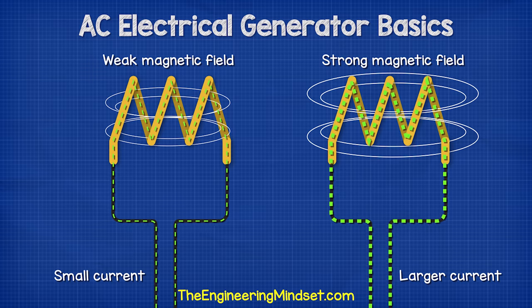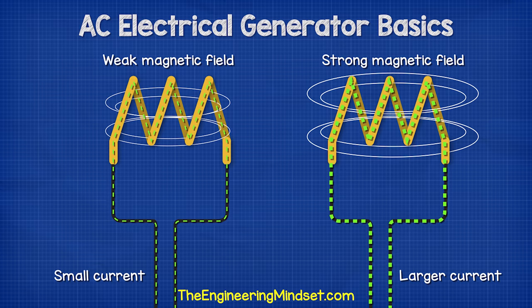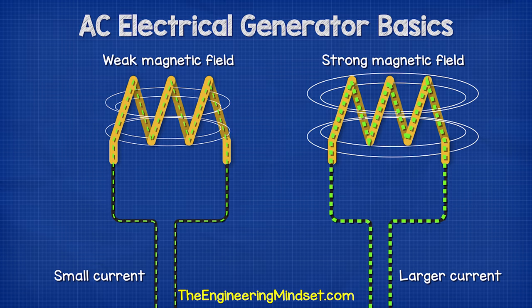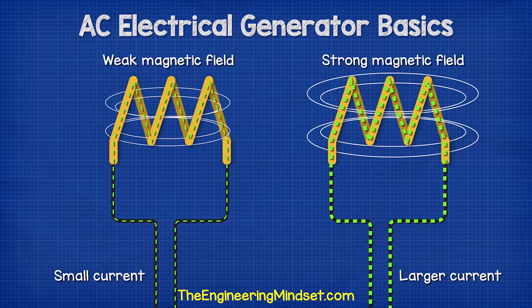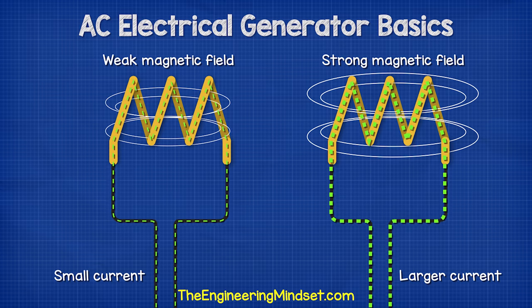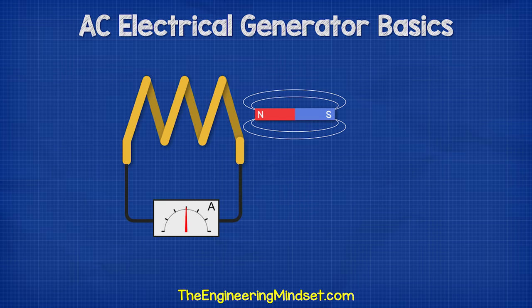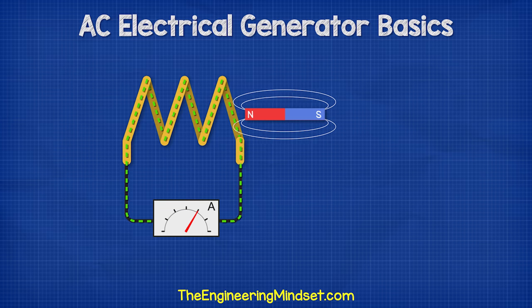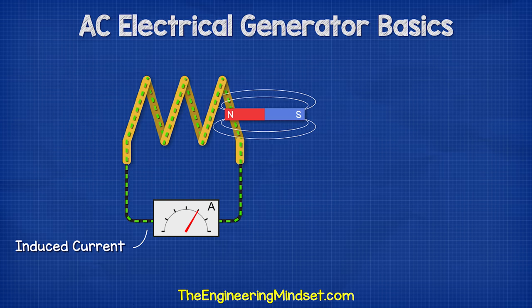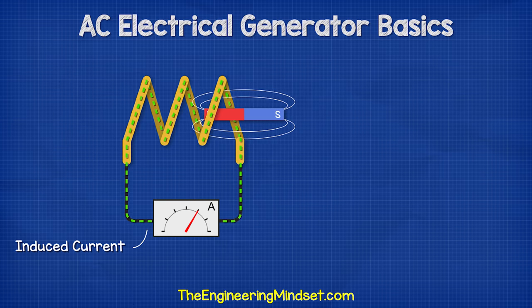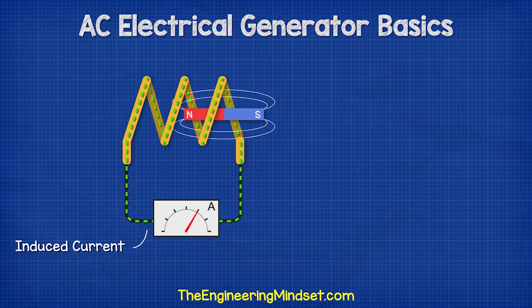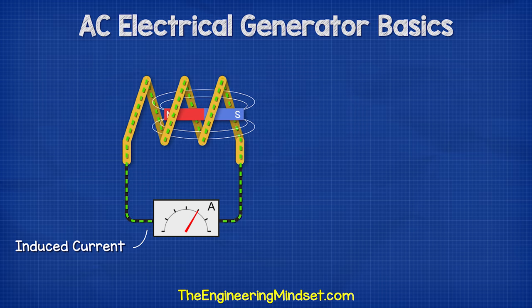If we increase the current to the coil, the electromagnetic field increases. We can also do the opposite — if we pass a magnet through a coil of wire, a current is generated in the coil.